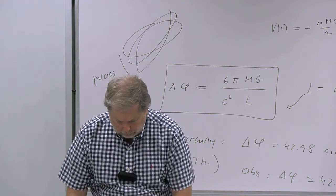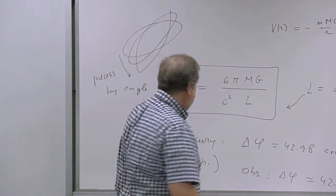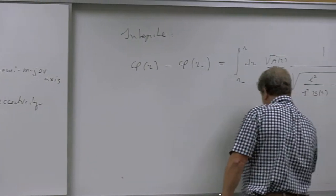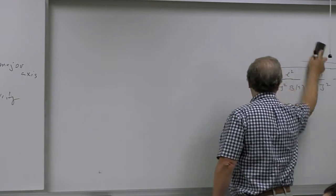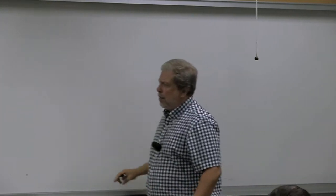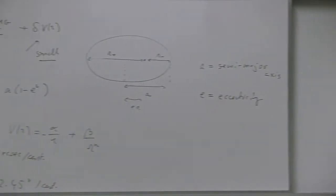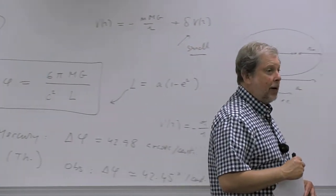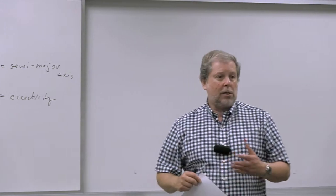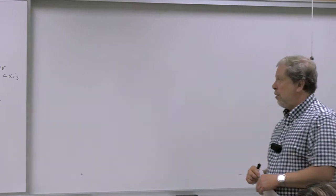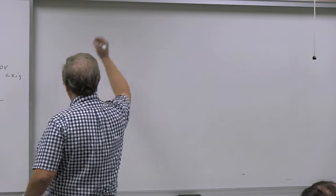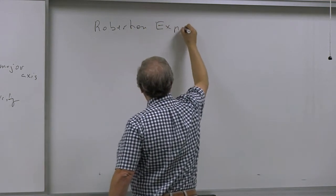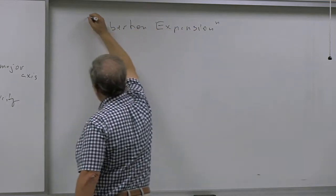Since then, people have asked: given good agreement between theory and experiment, could other theories also fit? One should parameterize the metric. This leads to the Robertson expansion: one writes the static isotropic metric as d tau^2 = b(r) dt^2 - a(r) dr^2 - r^2 d omega^2, but now allows a and b to deviate from the Schwarzschild form.